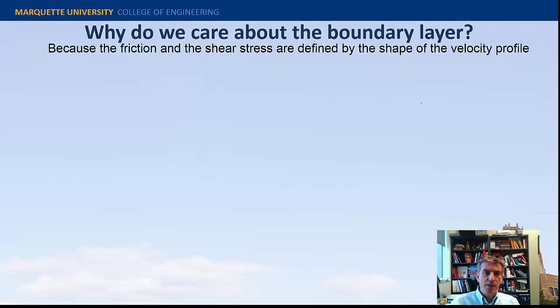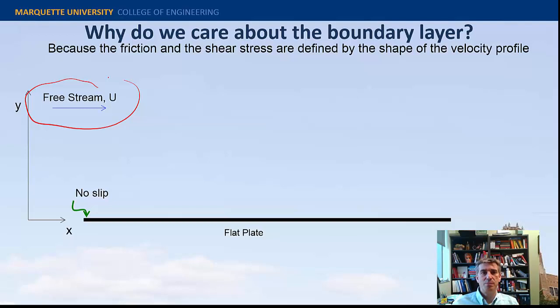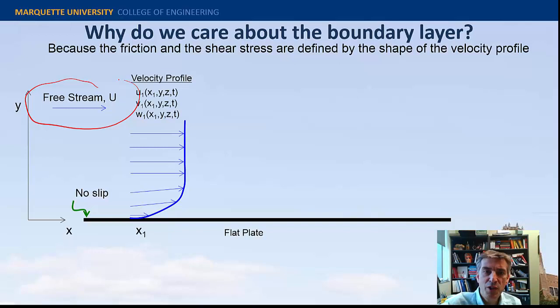Why do we care about the boundary layer? We care because friction and shear stress are all defined by the shape of the velocity profile. If you submerge a flat plate into a wind tunnel with a free stream velocity, the no-slip condition means the velocity goes to zero at the plate, which retards the flow above and creates this velocity profile.